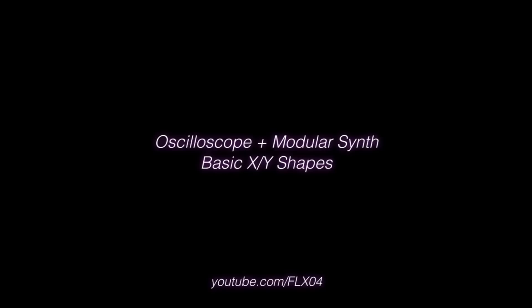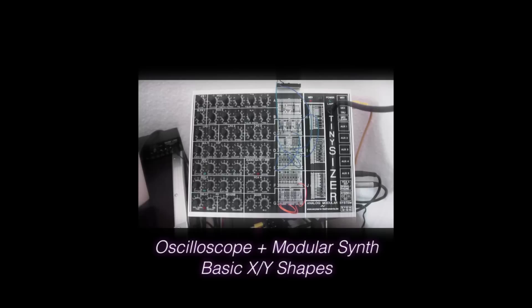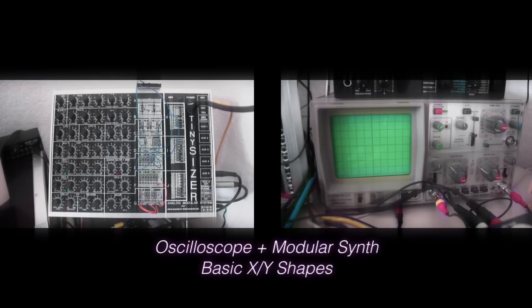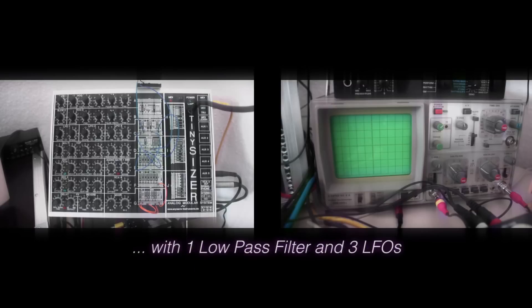Hello and welcome to a different kind of video demo. Many of you have a modular synthesizer or plan on getting one, and some of you might also have an oscilloscope lying around for work or a DIY hobby. Hooking up your modular synth to the X and Y inputs of your oscilloscope lets you draw shapes with light, which can be really fun. In this video I've got my tiny-sizer modular synth hooked up to an old CRT oscilloscope, and I will show you how to draw some basic waveforms with just a low-pass filter and three LFOs.